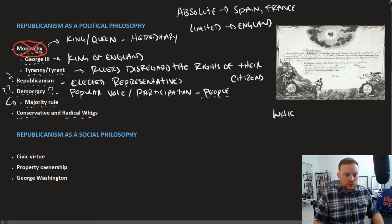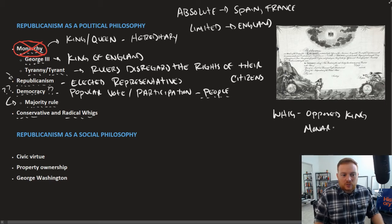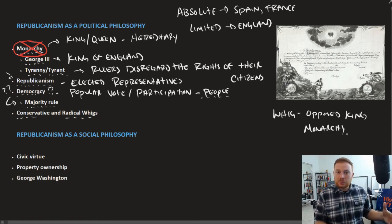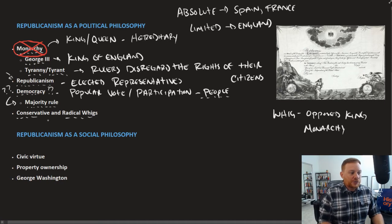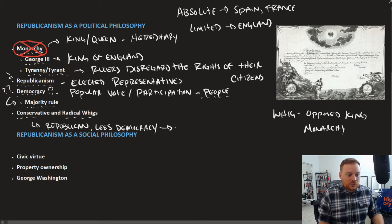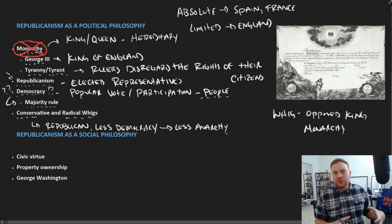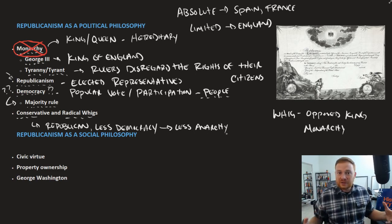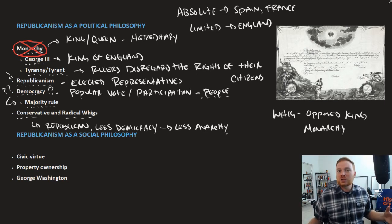Conservative Whigs favored a more republican government with less democracy, and by extension, less anarchy. There was a belief that if you allow things to be too democratic — if you let the people decide on every single matter — it's going to be too hectic and chaotic, and ultimately lead to anarchy. There's not enough order in the system.